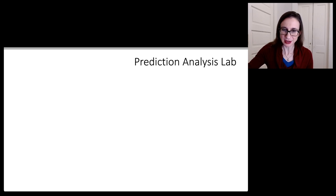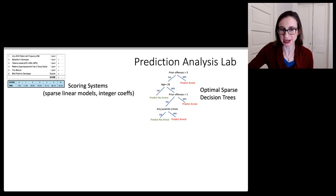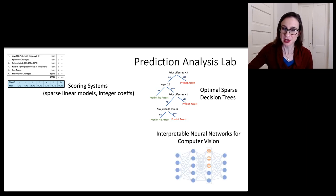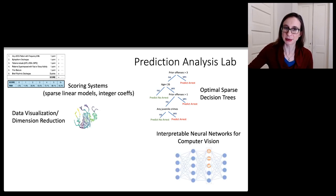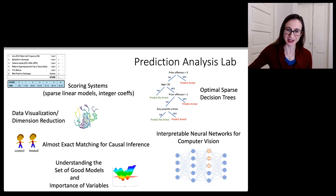All right, so I've talked about a couple of the projects that are going on in my lab, scoring systems and decision trees, and then interpretable neural networks. We have sort of three other areas that we work in, dimension reduction and data visualization, almost exact matching for causal inference, and as well as a theoretical project on understanding the set of good models and the importance of variables.